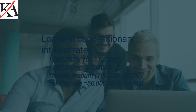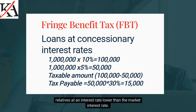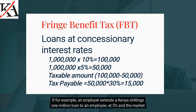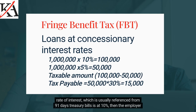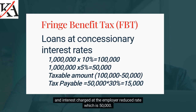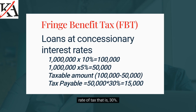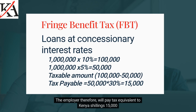Next, we look at fringe benefits tax. Fringe benefits tax is a tax charged in respect of a loan provided to an employee, director, or their relatives at an interest rate lower than the market interest rate. For example, if an employer extends a Kenya shillings 1,000,000 loan to an employee at 5% and the market rate of interest — usually referenced from 91-day Treasury bills — is at 10%, then the employer will be liable to pay tax on the difference between the interest payable at market rate (Kenya shillings 100,000) and interest charged at the employer's reduced rate (Kenya shillings 50,000). Fringe benefit tax will be applied on the resultant amount of Kenya shillings 50,000 at the corporate rate of tax of 30%, meaning the employer will pay tax equivalent to Kenya shillings 15,000.